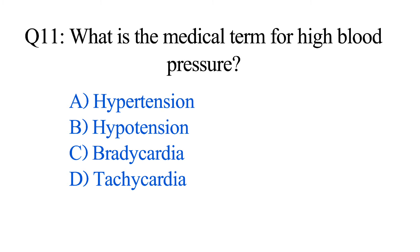Question number eleven. What is the medical term for high blood pressure? Option A: Hypertension. B: Hypotension. C: Bradycardia. D: Tachycardia. The correct option is Option A: Hypertension.